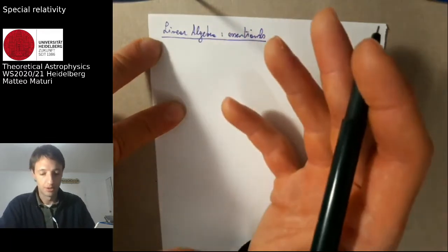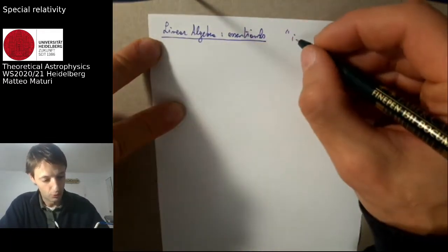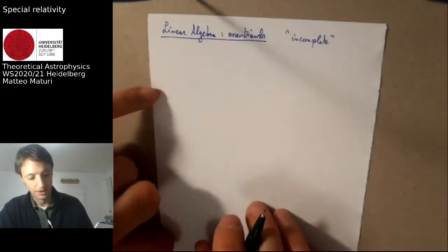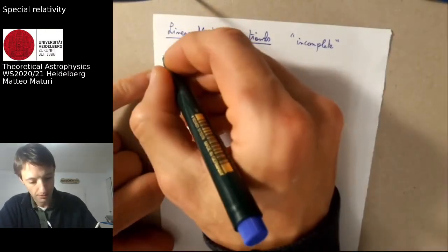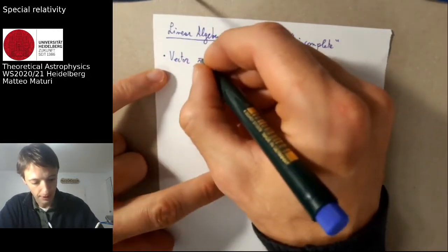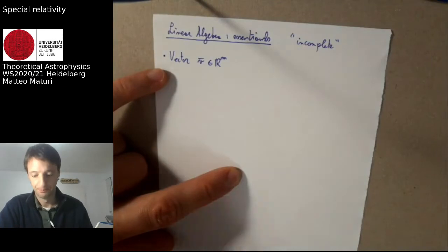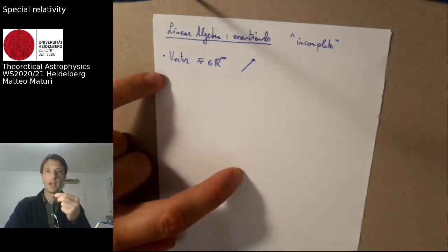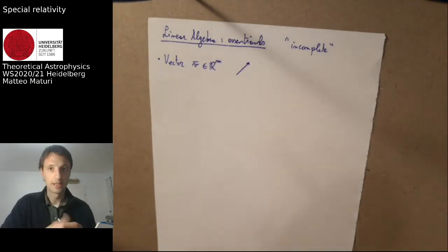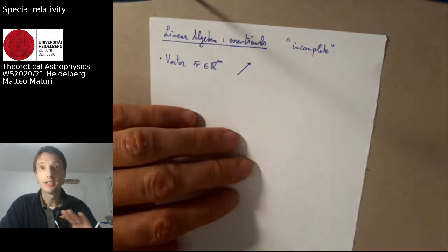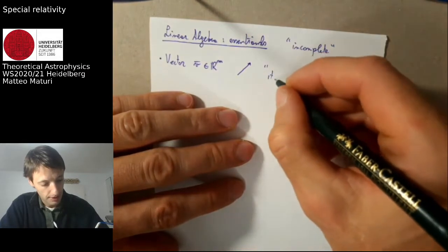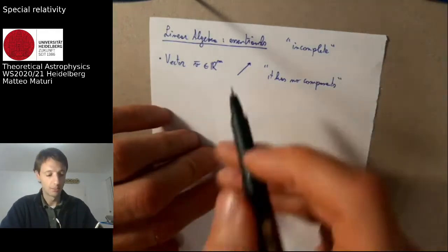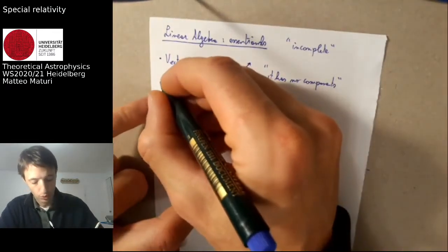Linear algebra is a full set of lectures on its own — I'm just going to give you some essentials that you need to know, so this is going to be incomplete. I'm just giving you the basics. Let's start with one of the simplest objects in linear algebra: vectors. We can define a vector that belongs to a space of size m. A vector has a direction and a modulus — these are the intrinsic properties of a vector. As described now, it has no components.